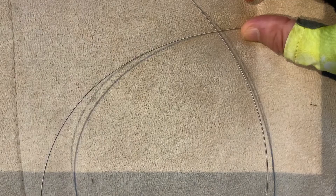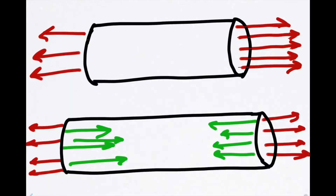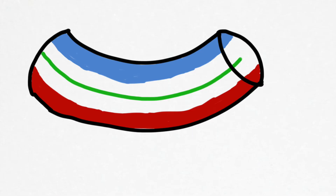A guitar string under tension will behave like a stiff spring — the guitar string will stretch, and this stretching will be countered by elastic forces internal to the string. Our previous analysis ignored this fact. The tension applied to the string by the tuning machines is actually distributed over the cross section of the string; this distributed force of tension is called axial stress. The string's response to axial stress is to become longer until the internal forces balance the stress of tension — this lengthening is called strain.